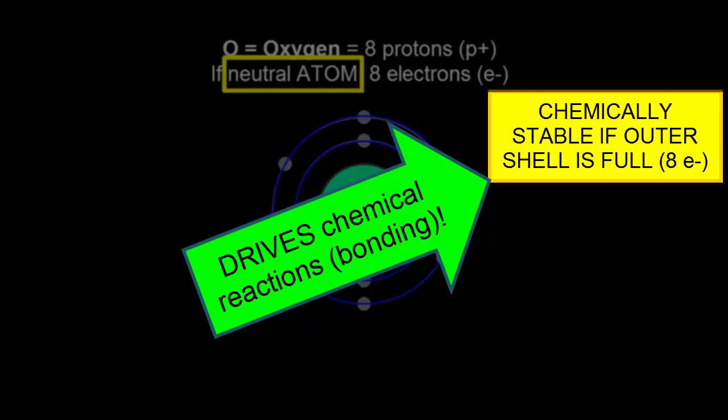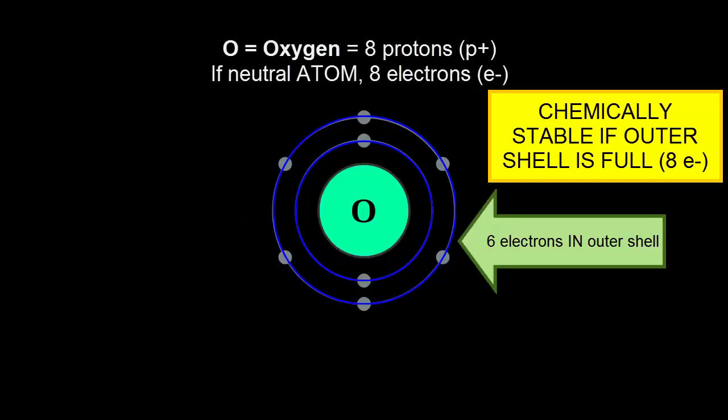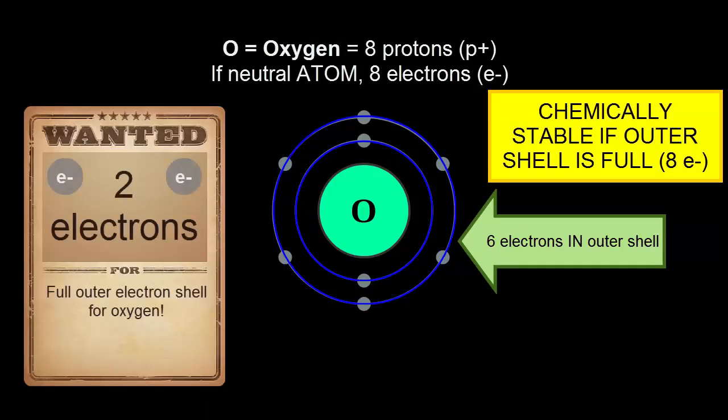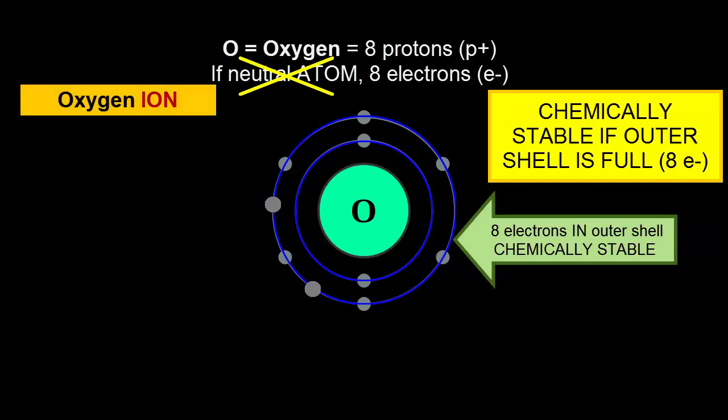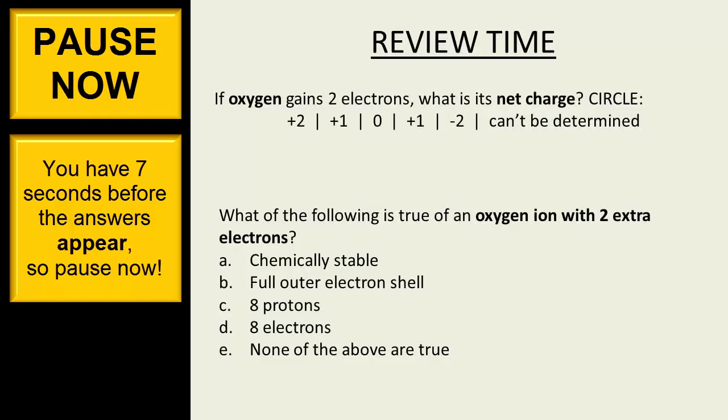Atoms bond with each other in ways to help create full outer electron shells. For example, oxygen wants two more electrons. If oxygen could get two more electrons, would it be neutral any longer? No. What would be its net charge? Pause now.